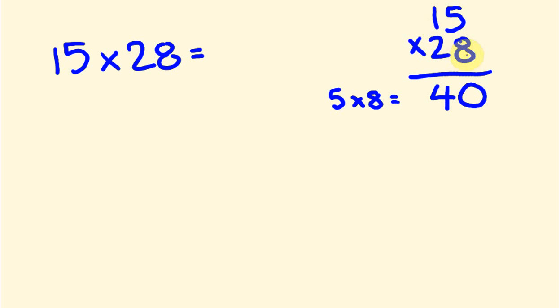Then the next part we do is 10 times 8, which is 80, because the 1 here is actually a 10. The next thing we have is we're multiplying this part by 20, so 20 times 5 is 100.